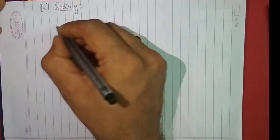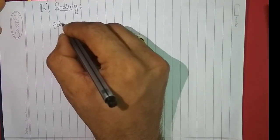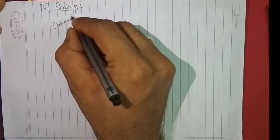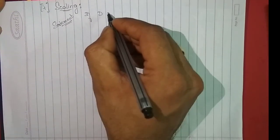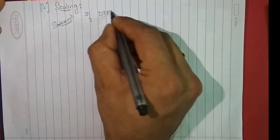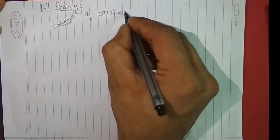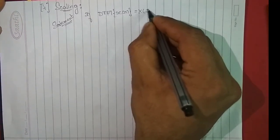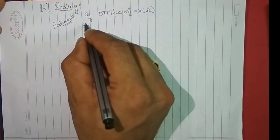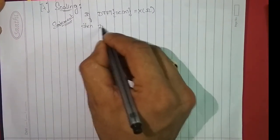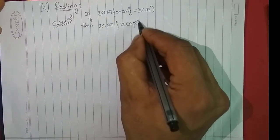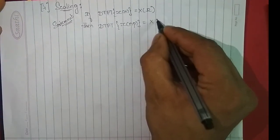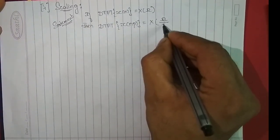We will try to prove the scaling property of DTFT. Statement: as usual, if DTFT of x of n is equal to X of omega, then DTFT of x of n into p is equal to capital X of omega by p.